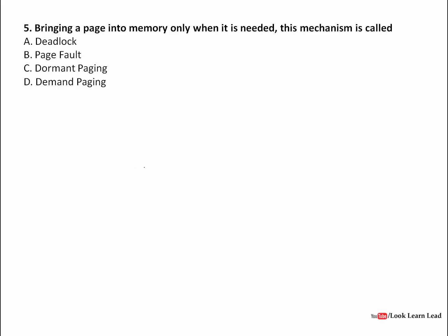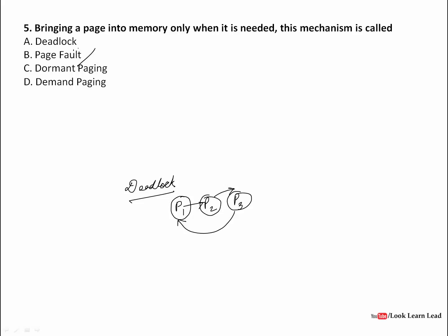The next question: bringing a page into memory only when it is needed is called demand paging. Let's also clarify deadlock: suppose processes P1, P2, P3 exist — P1 is waiting for a resource held by P2, and P2 is waiting for a resource held by P1. This situation is called deadlock. Demand paging means a page is brought into memory only when needed. The answer is D: demand paging.